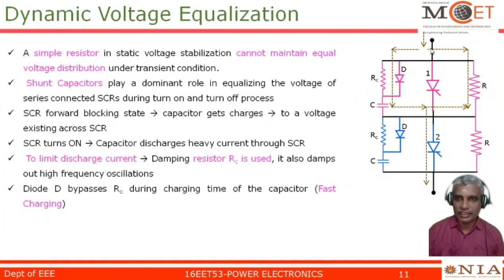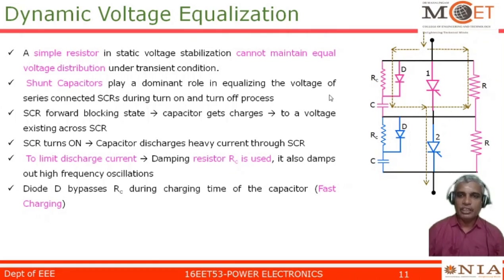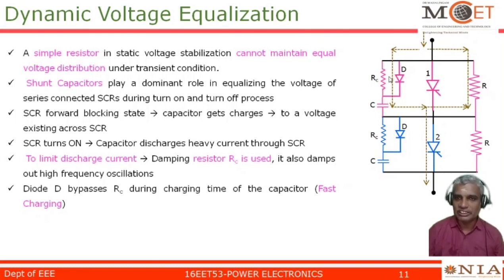When the SCR is in the forward blocking state, the capacitor gets charged to a voltage existing across the SCR. Once the SCR has been turned on, the capacitor will discharge heavy current through the SCR. In order to limit this discharging current, a damping resistance RC is used and it also damps out high frequency oscillations. Diode D bypasses the RC during charging time — because of this diode, the current will not flow through this resistance during charging.